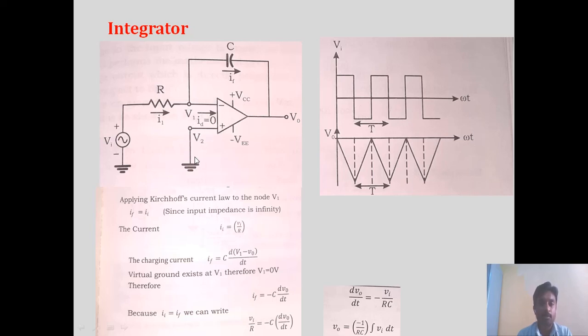If V2 is 0, the voltage at this particular node V1 will be considered as 0. That is why the expression for I1 becomes VI divided by R.